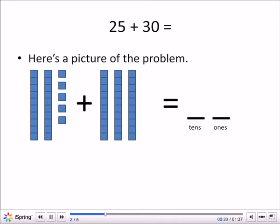There's 25 blocks. And plus, there's 30 blocks. There's three groups of 10: 10, 20, 30.